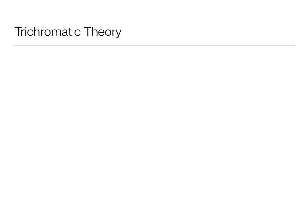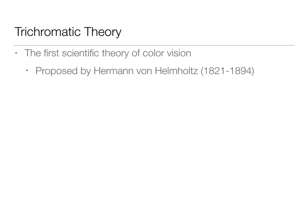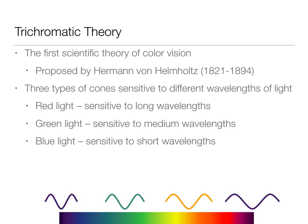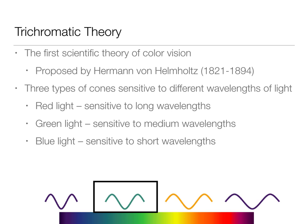Let's talk about some theories of vision — mostly color theories. The first is the trichromatic theory. 'Chromatic' means color, and 'trichromatic' means three-color theory. It was the first scientific theory of color vision, proposed by Helmholtz. He proposed three types of cones sensitive to different wavelengths: long cones sensitive to red light, medium cones sensitive to green light, and short cones sensitive to blue light.